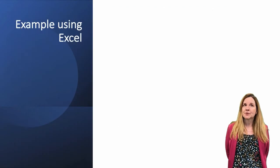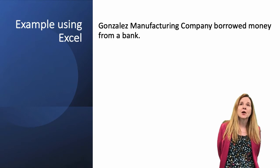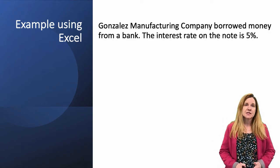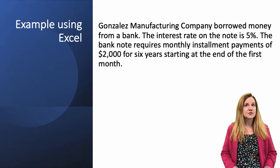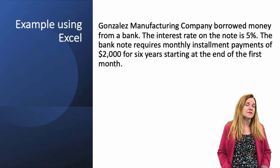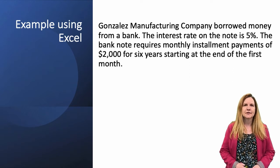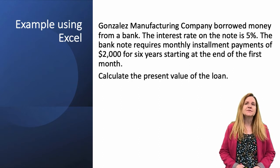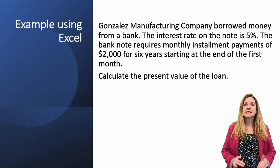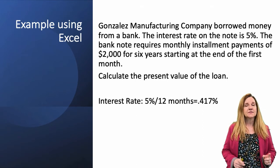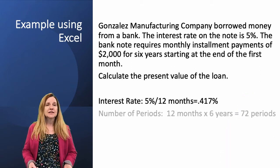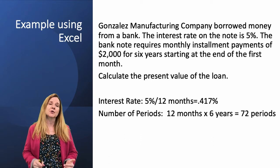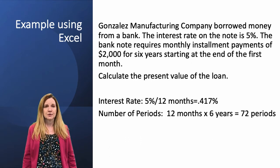Here's another example: Gonzalez Manufacturing Company borrowed money from a bank. The interest rate on the note is 5%. The bank note requires monthly installment payments of $2,000 for six years, starting at the end of the first month — so this is an ordinary annuity. Calculate the present value of the loan. Since this is monthly, we take the 5% interest rate, divide by 12 to get 0.417%, and multiply six years by 12 months to get 72 periods.